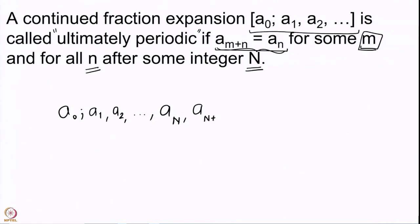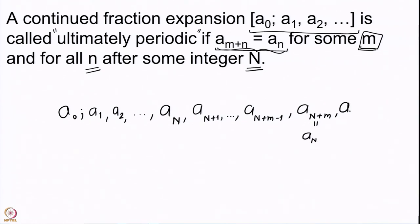After position N, whatever partial quotients we have — a_N, a_{N+1}, ..., a_{N+m-1} — they keep repeating: a_{N+m} equals a_N, and so on. After you get N+m−1 you again have a_N and so on. This is what we mean by ultimately periodic continued fraction expansion — the continued fraction from position N onwards simply keeps repeating.